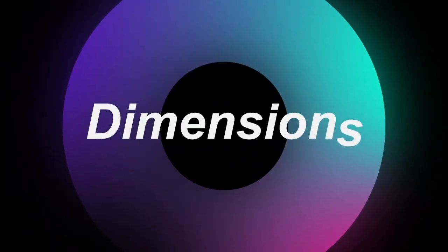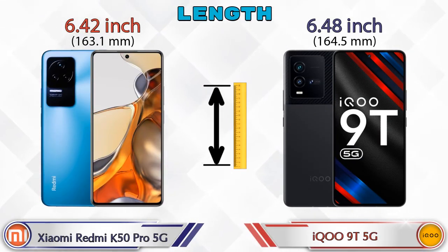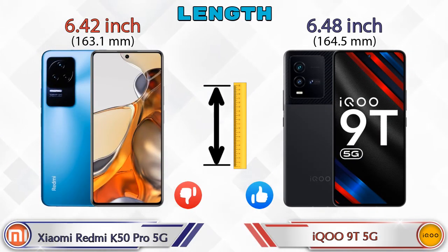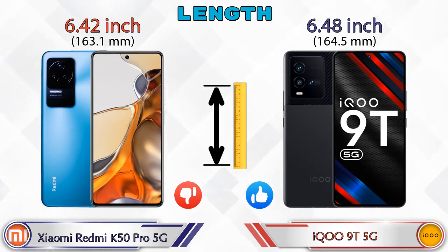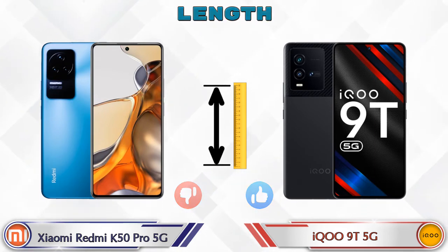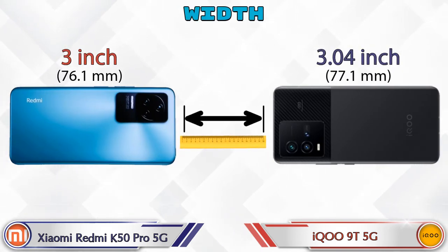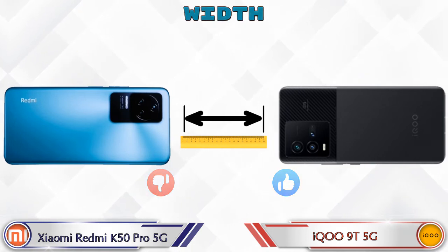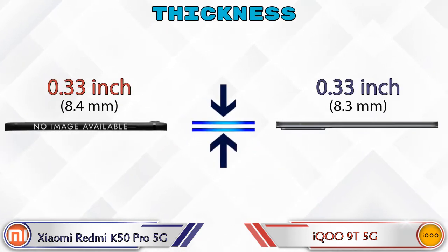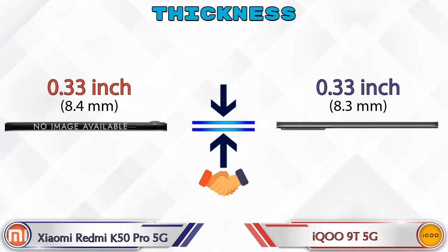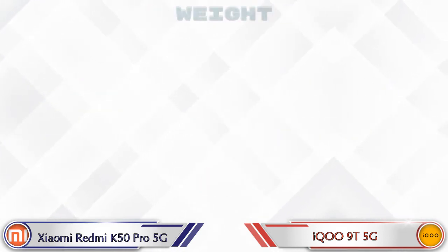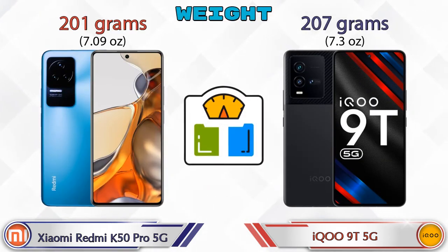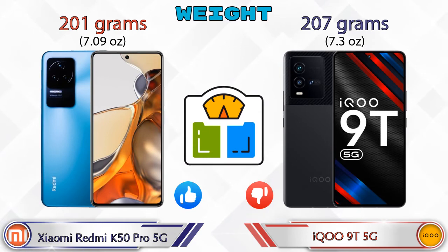Now let's check the dimensions. For length, the K50 Pro 5G is 6.42 inches and the iQOO 9 5G is 6.48 inches. Width: K50 Pro 5G is 3 inches and iQOO 9 5G is 3.04 inches. Both phones have the same thickness of 0.33 inches.